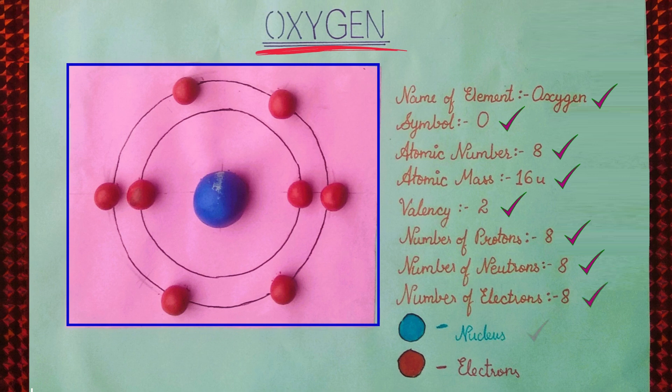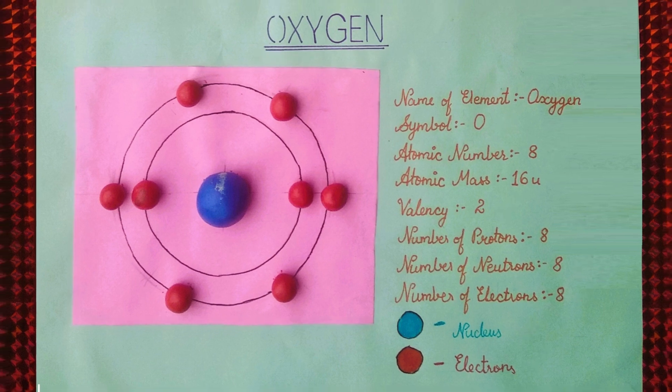Blue color represents the nucleus and red color represents the electrons of Oxygen.